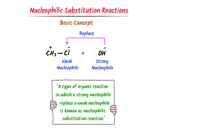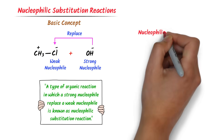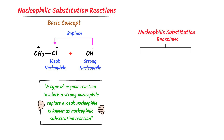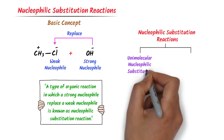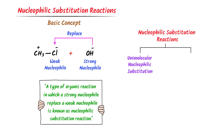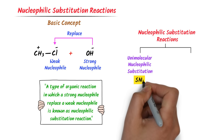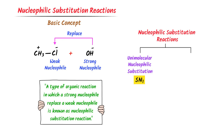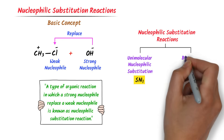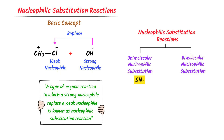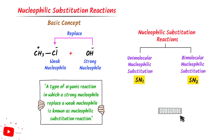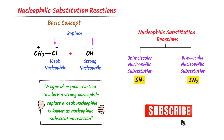Remember that there are two types of nucleophilic substitution reaction. The first is unimolecular nucleophilic substitution reaction and we call it SN1 reaction. While the second one is bimolecular nucleophilic substitution reaction and we call it SN2 reaction. Let's note down all these important points.